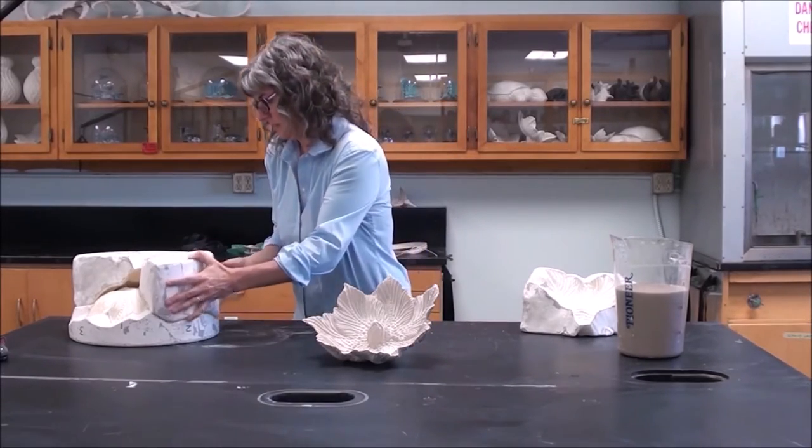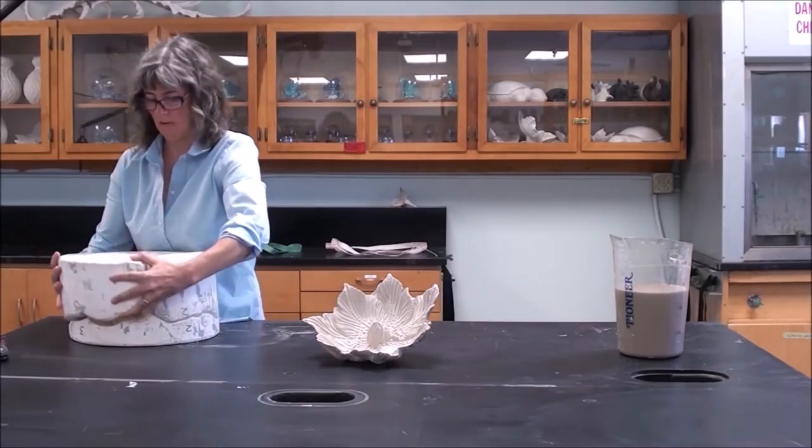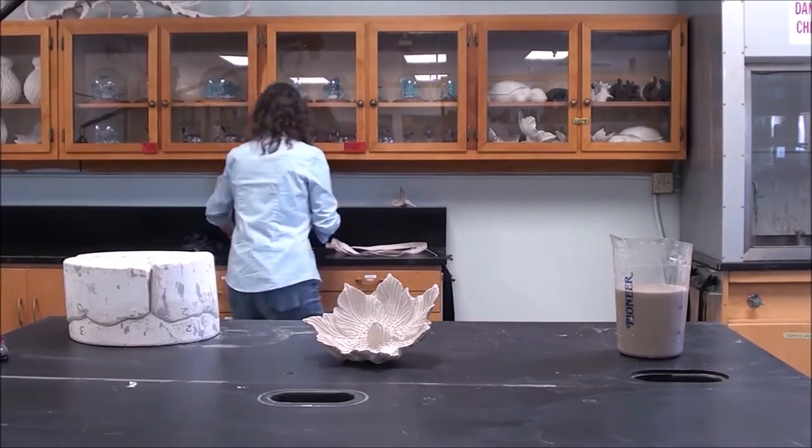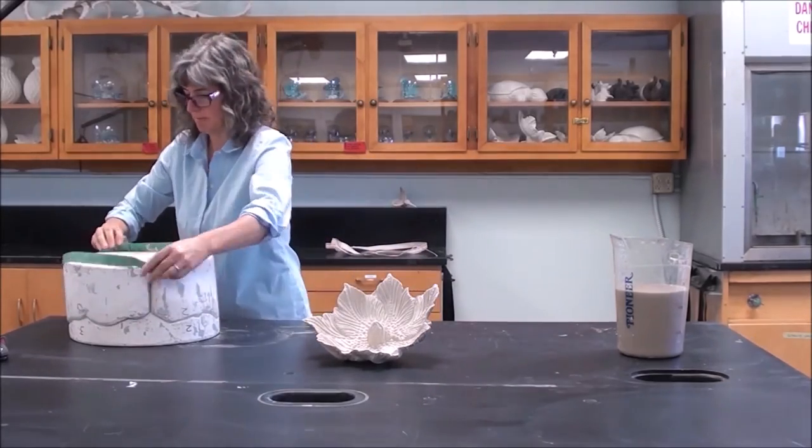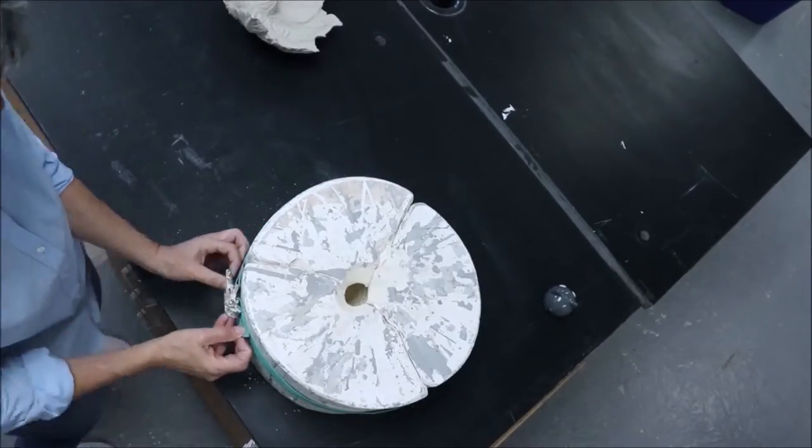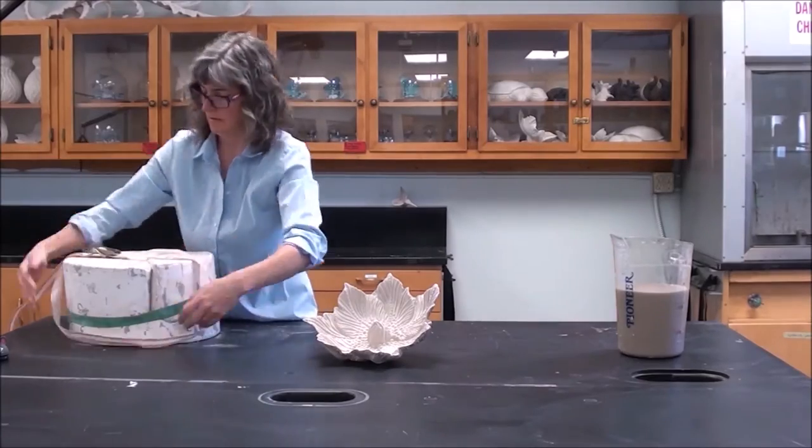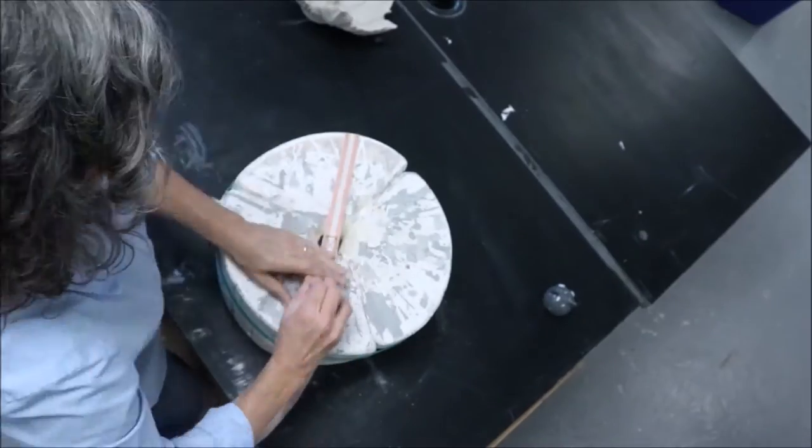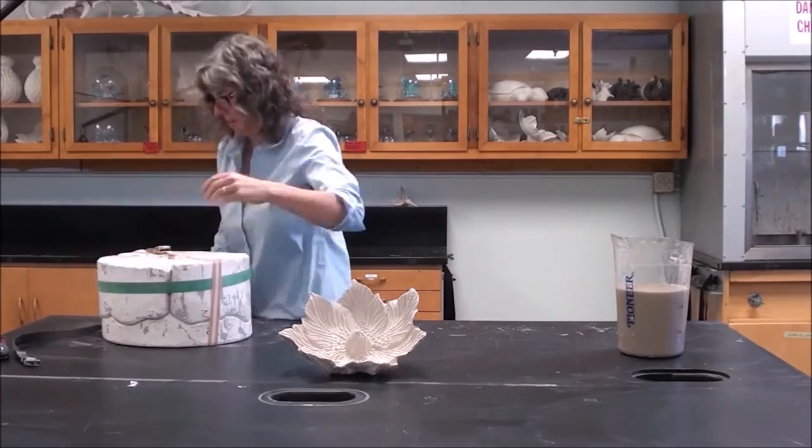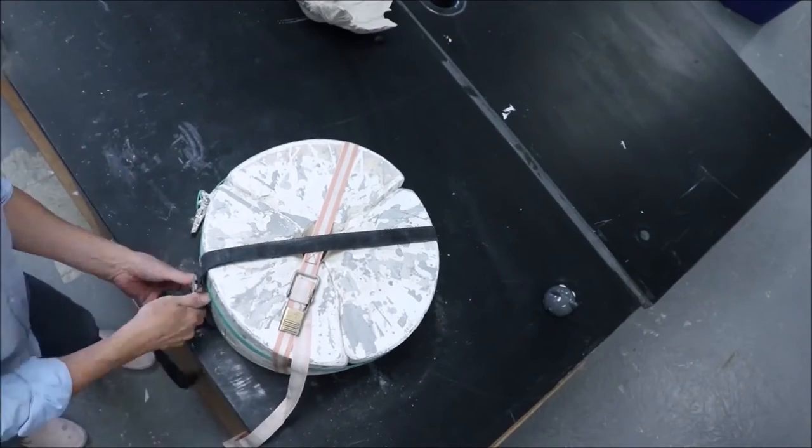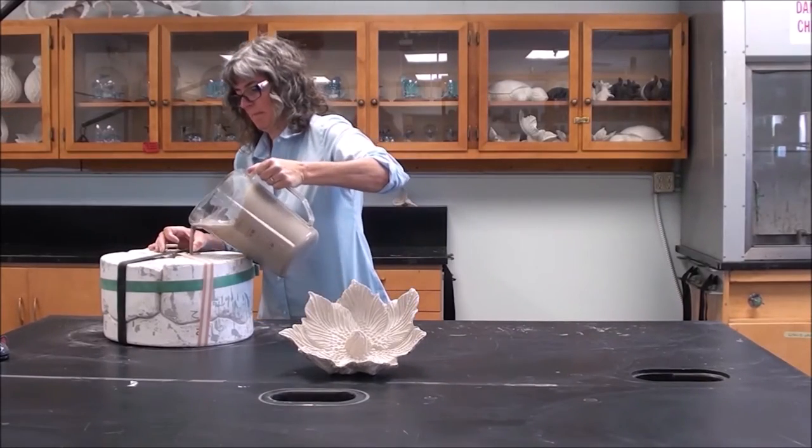However, the mold I made of this flower is very difficult due to the shape of the flower and the fact that I am casting both sides of the flower. The slip casting process works the same as usual, but you will notice I am using fabric straps to hold the mold together rather than rubber bands. This is because the mold is big and heavy and the rubber bands are not up to the job.